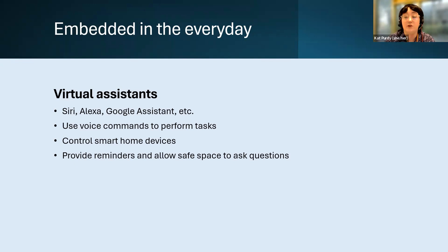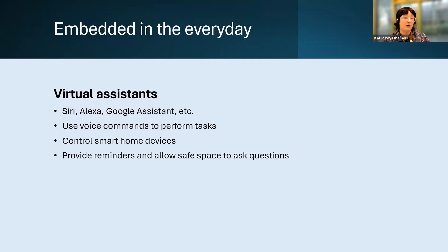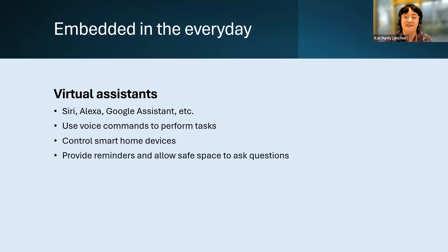Virtual assistants can control smart home devices without requiring manual dexterity — turning lights on and off, shopping without leaving home, which benefits people with mobility impairments or high anxiety. They can also provide reminders to help with time blindness, often experienced by people with ADHD, and can answer questions without judgment for those with neurocognitive differences. Google has also embedded Gemini into its search engine, summarizing information from various websites at the top of the page, which is useful for those with neurocognitive differences.